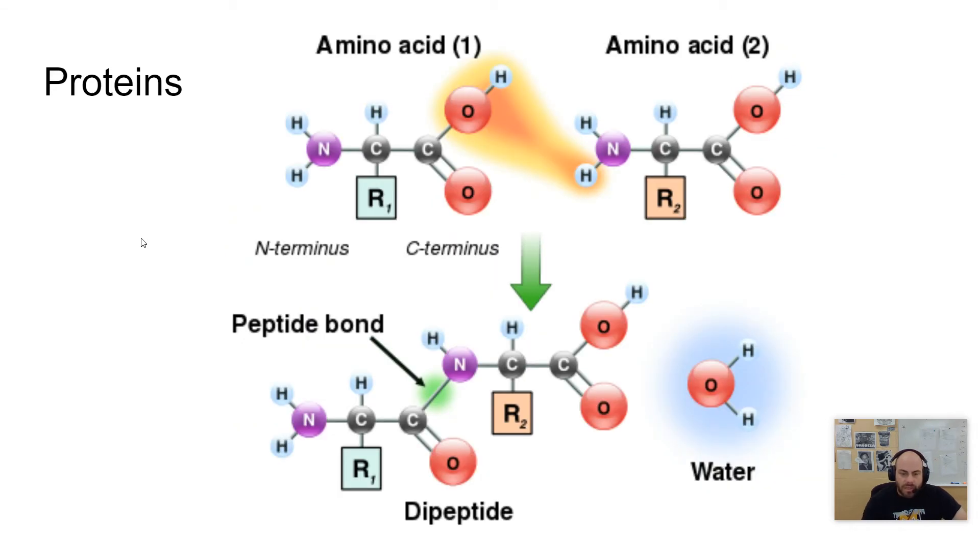This is an example of two amino acids joining together. Remember, we talked about this in the previous video. Here you have the N-terminus and the C-terminus. So the OH of the C-terminus combines with the H of the N-terminus. Pull that water out, and you combine it, and that forms this covalent bond known as a peptide bond.